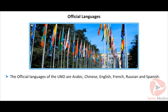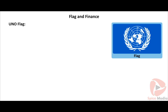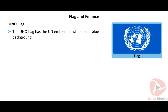The official languages of the UNO are Arabic, Chinese, English, French, Russian, and Spanish. English and French are the working languages of the UNO. The UNO flag has the UN emblem in white on a blue background.